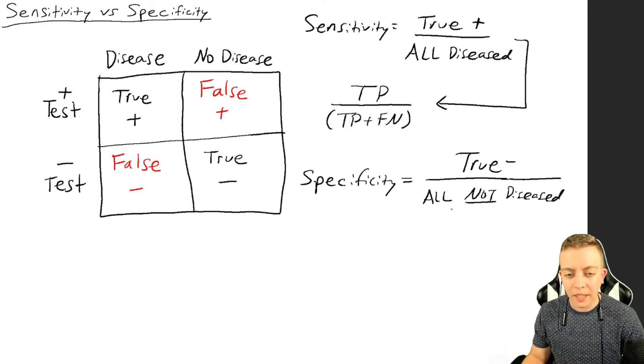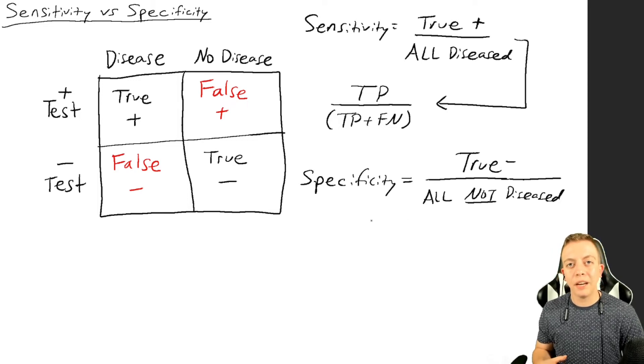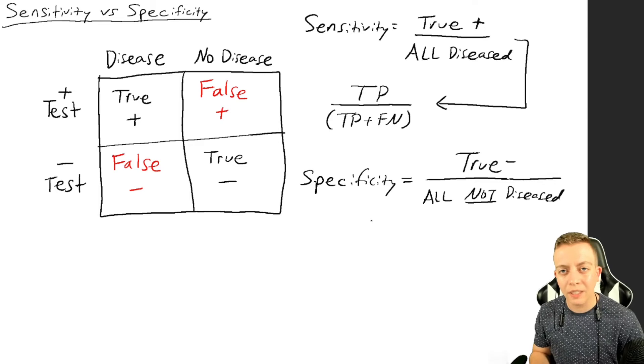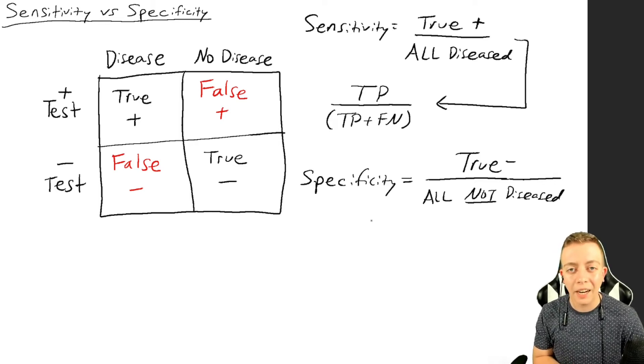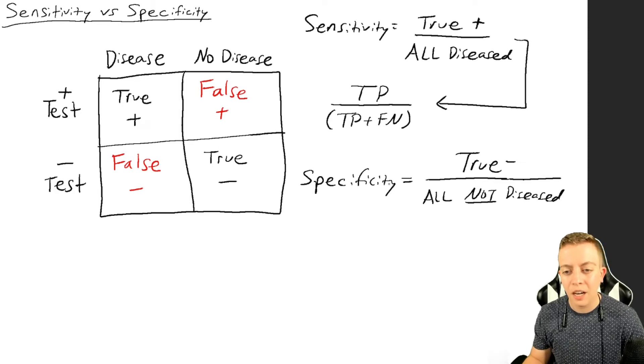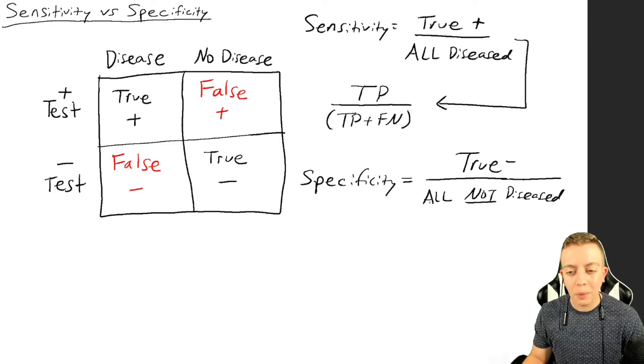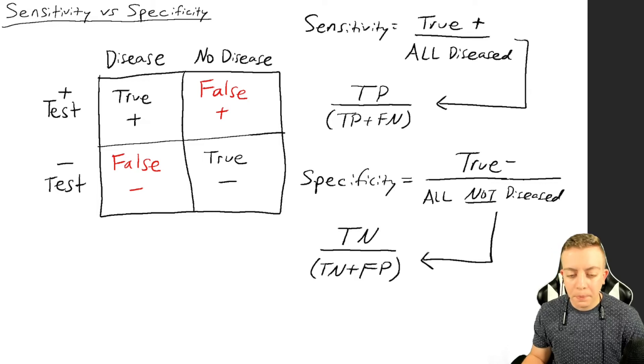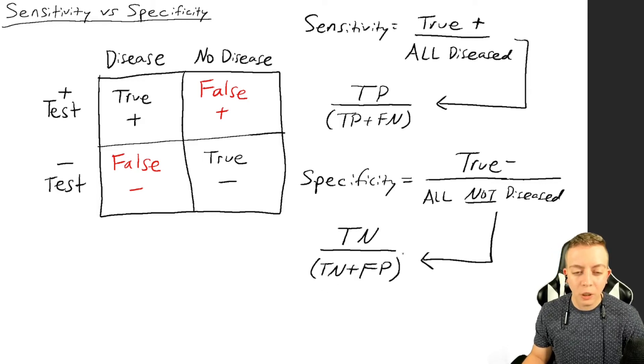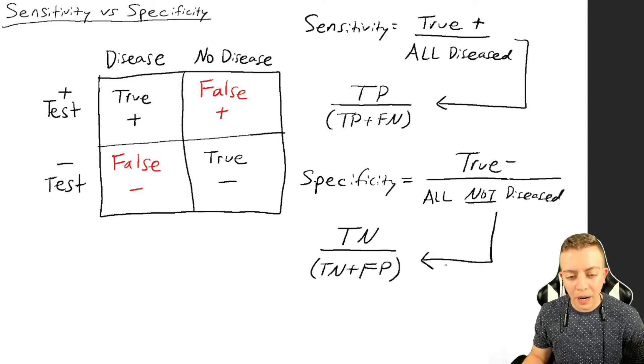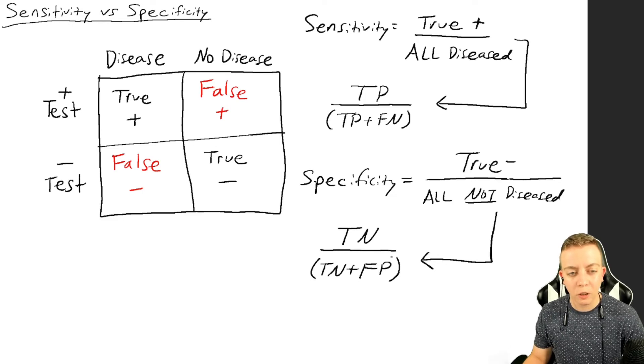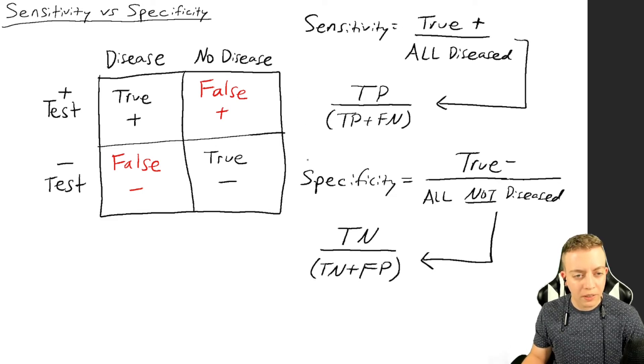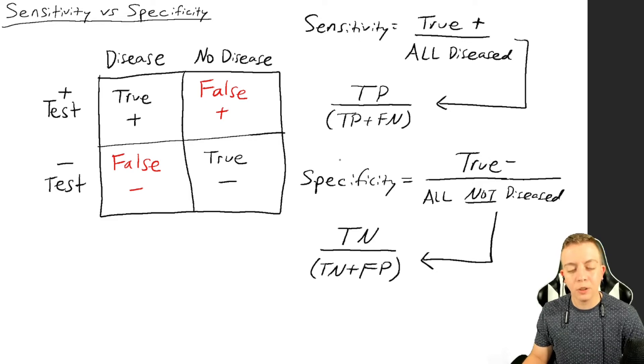For specificity, it's kind of the opposite. It refers to if I am known to not have the disease, what is the likelihood that my test would be negative. We have the true negatives and divide those by all of the people who are not diseased. That would include people who have a true negative and who have a false positive. So you're taking all of the true negatives and dividing them by the sum of the true negatives plus the false positives. That gets you your specificity.